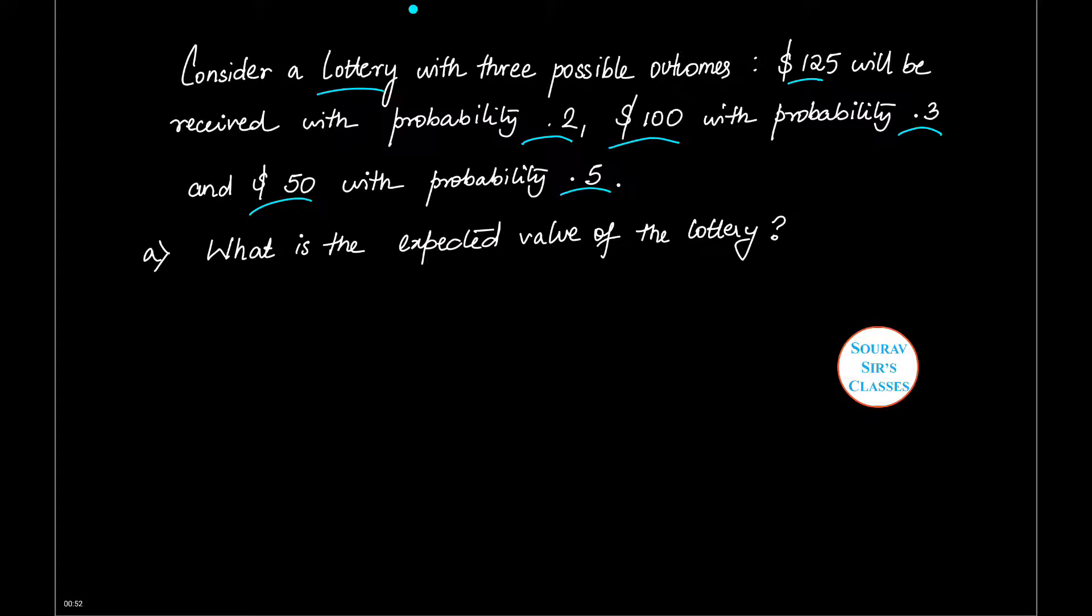So what is the expected value of the lottery? The expected value of the lottery is equal to the sum of returns weighted by their probabilities. This is the formal definition of the expected value of lottery.